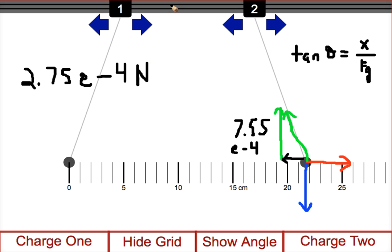Coulomb was looking at what were the factors that affected the force electric. By using the angle of the string and the force of gravity, we can find the force electric between these two charged pith balls.